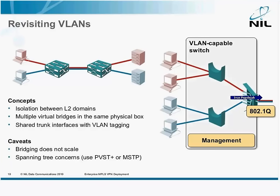Now there are two well-known problems. First, bridging doesn't scale. Until we get Fabric Path and TRILL, we still have to deal with spanning tree — either per-VLAN spanning tree or Multiple Spanning Tree Protocol. For large networks, it's a pain.